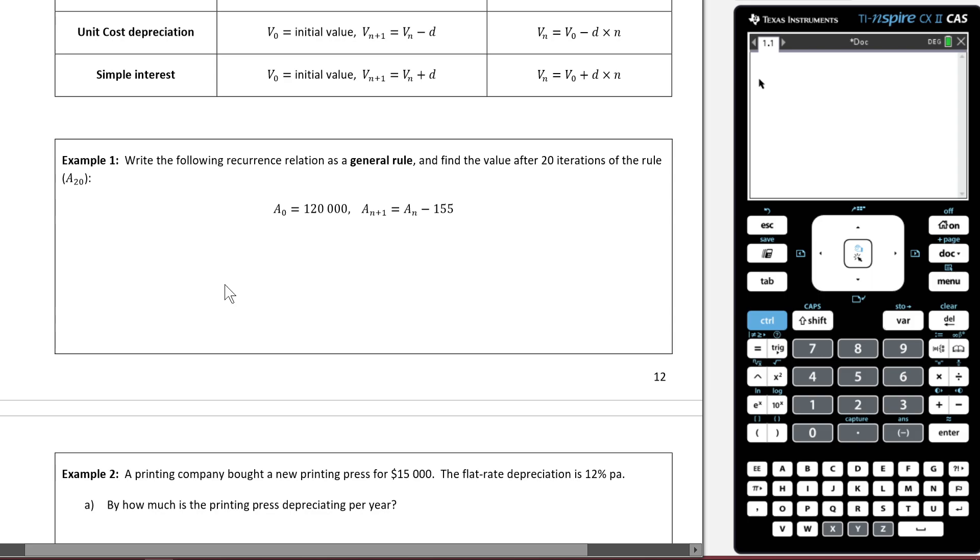So this is the part of the lesson we'll now start making sense. It says write the following recursion relation as a general rule and find the value after 20 iterations of the rule, so A_20. As you can see here, we've been told that we're starting with 120,000. And then at each iteration, we are subtracting 155. So each time we're subtracting 155.